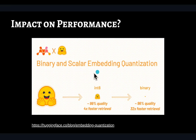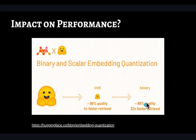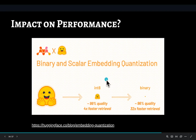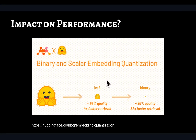This will definitely save you on storage cost and compute cost, but what about the performance? That's where we're going to look at a study done by the Hugging Face team, where they showed that for certain embedding models, if you reduce the quantization level from 32-bit to 8-bit, you are still able to preserve up to 99% accuracy. And even if you substantially reduce it to a single bit, you can still preserve up to 96% accuracy of the original model, which is pretty amazing in terms of storage needs and retrieval speed. We're going to look at that study and I'll show you a practical example of how you can implement this in your own pipelines.